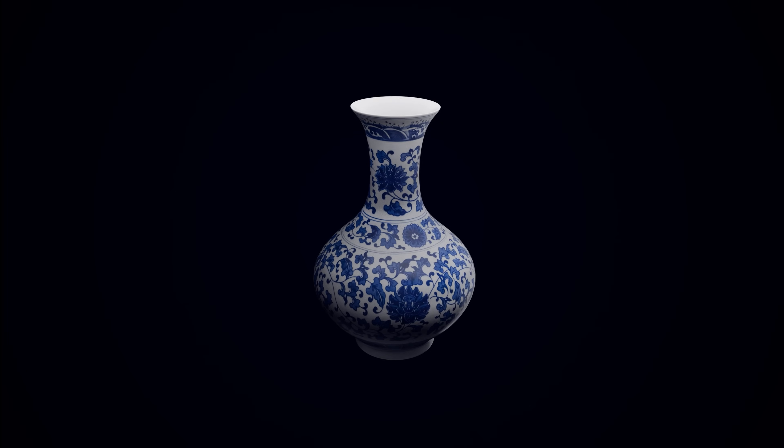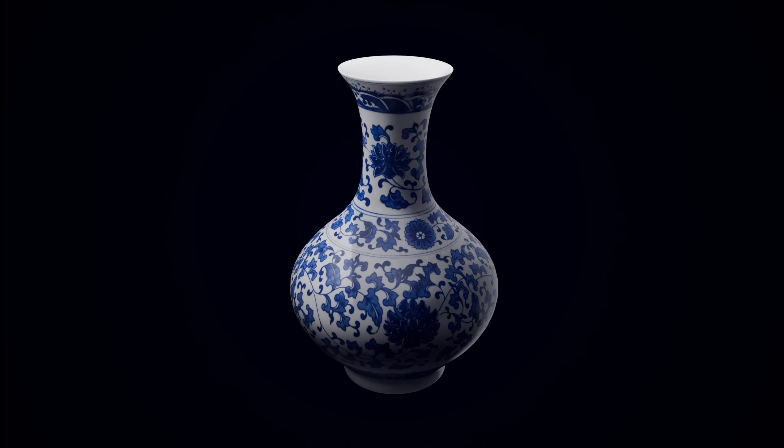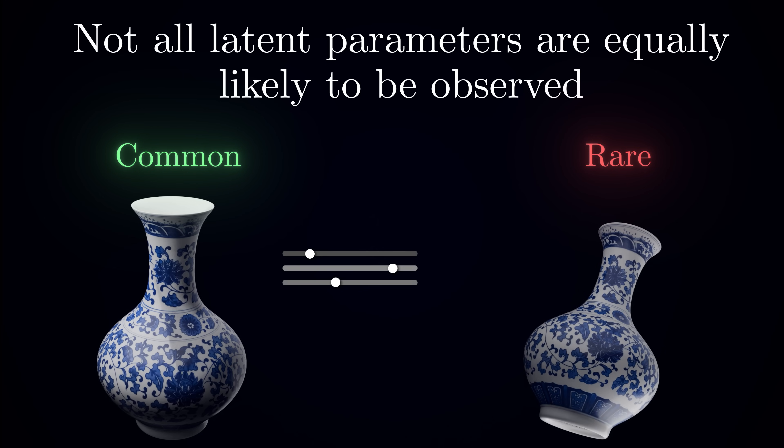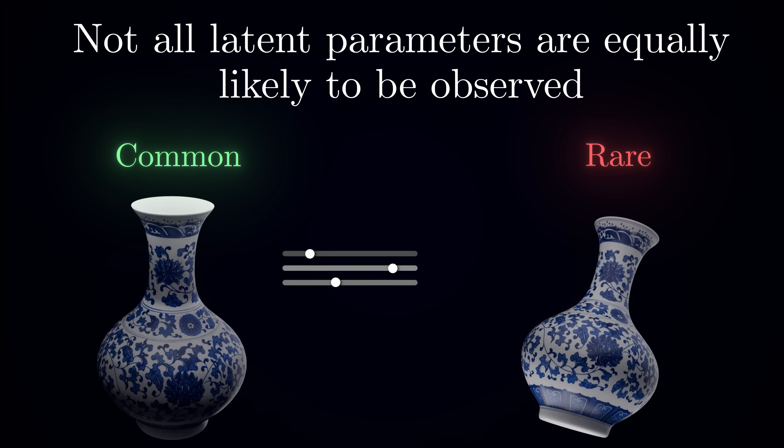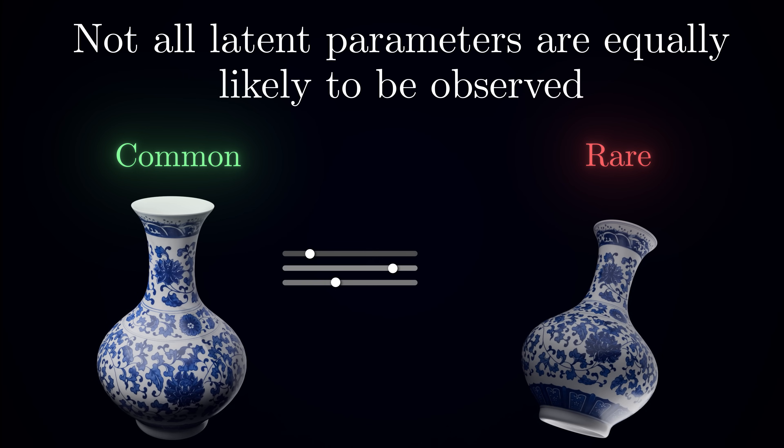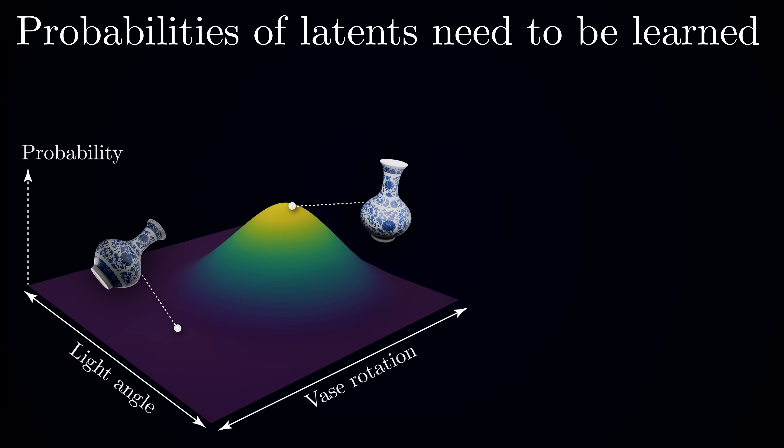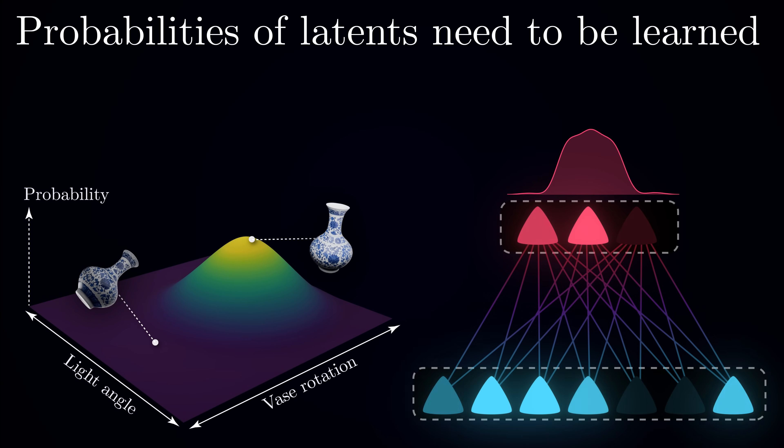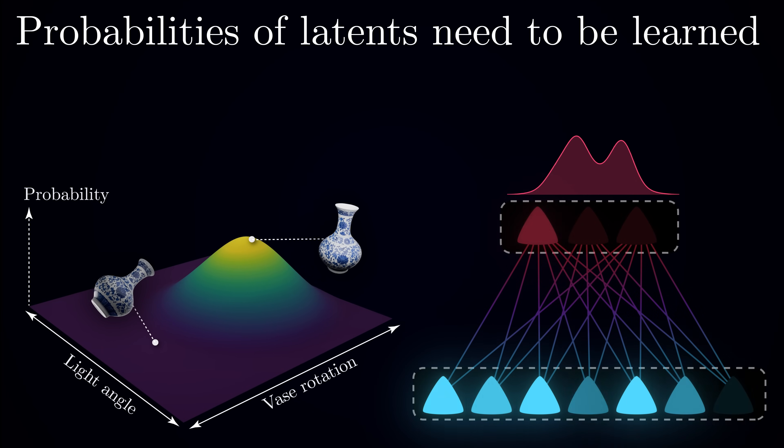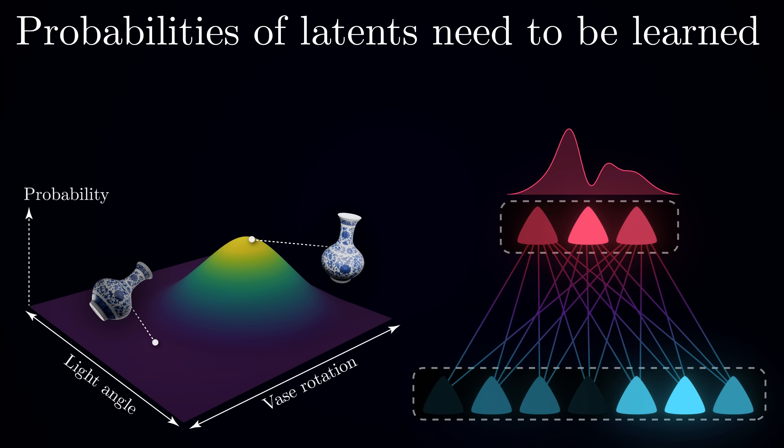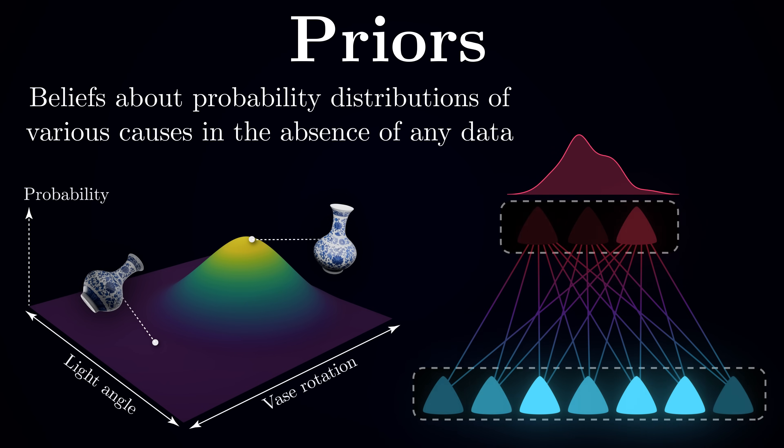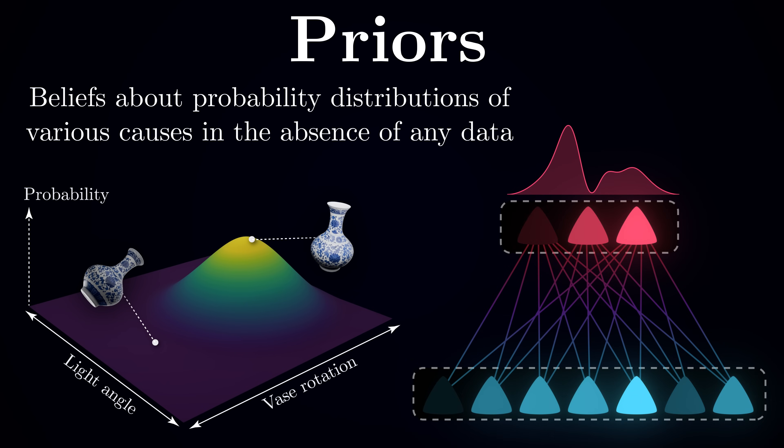Now imagine you are setting up the scene to match photographs of real objects. You would quickly discover that some slider combinations occur much more frequently than others in the real world. Light sources are usually above objects, not below them, and objects tend to rest on surfaces in stable positions. Through experience, you will develop an intuitive sense of which parameter combinations are more likely to occur. This is exactly what your brain does. It learns which patterns of latent neuron activity correspond to real-world situations and are thus more common than others.